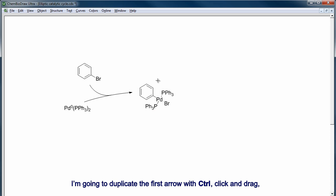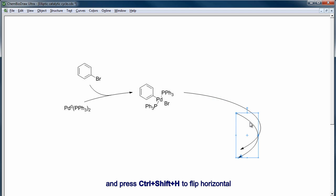And now here comes the trick. I'm going to duplicate the first arrow with control, click and drag, and overlay it back on top of the first one, and then drag both ends towards the following reaction intermediate. Now here I hold control, click and drag to duplicate. I adjust the length, and then select the arrow and control shift H to flip horizontal.